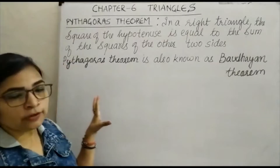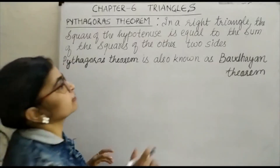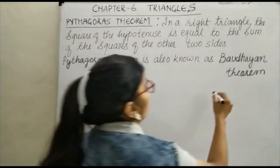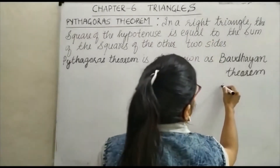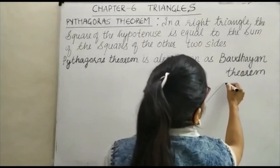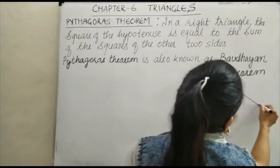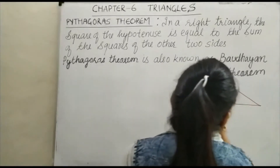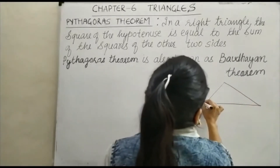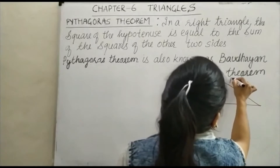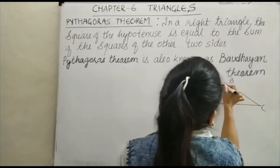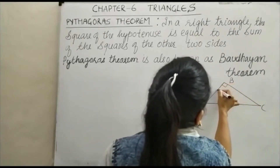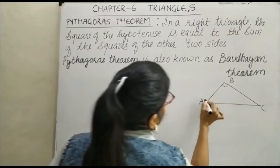Pythagoras theorem says that in a right triangle — so let us make a right triangle. This is our right triangle with vertices A, B, and C, where angle B is 90 degrees. So this is our right angle triangle.